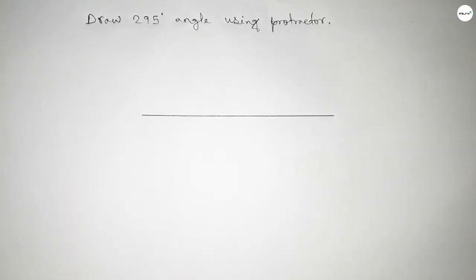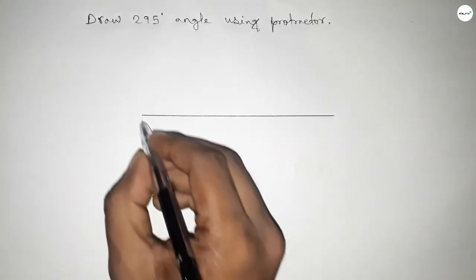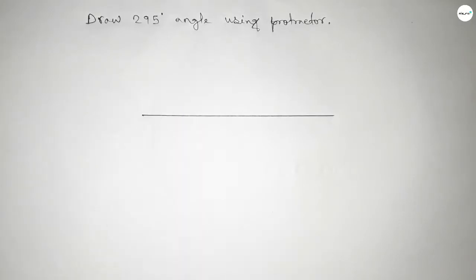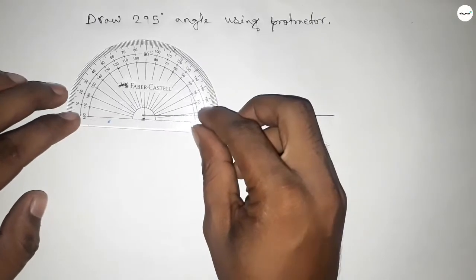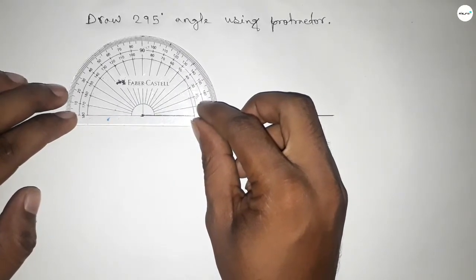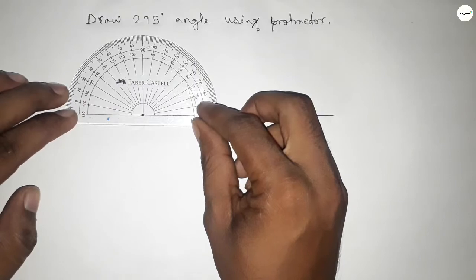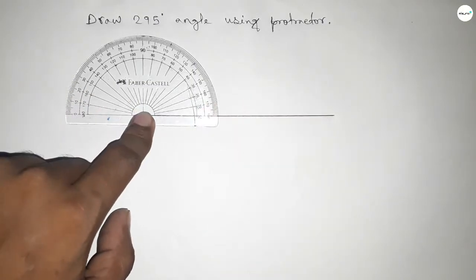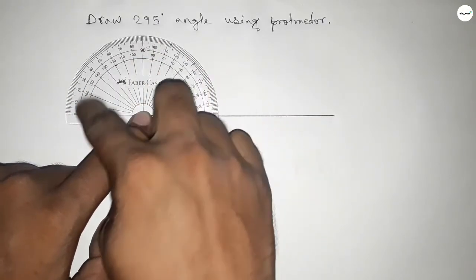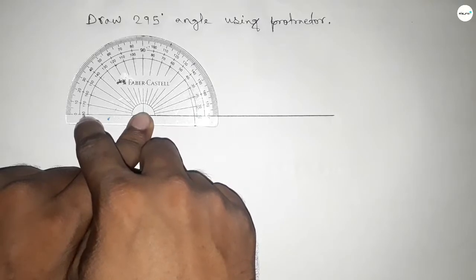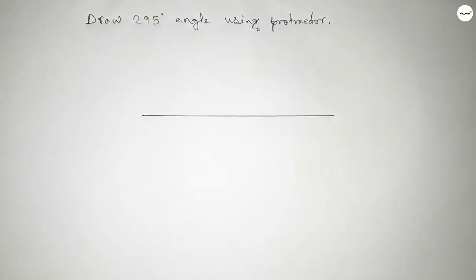Next, pointing out here to draw 295 degree angle on this point. Now putting the protractor on the line perfectly, then counting the angle. So this is 180 degree, but we have to draw 295 degree angle.